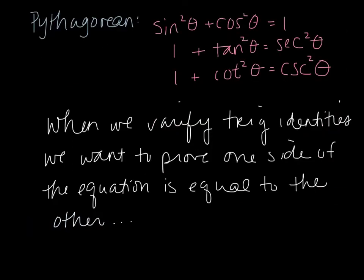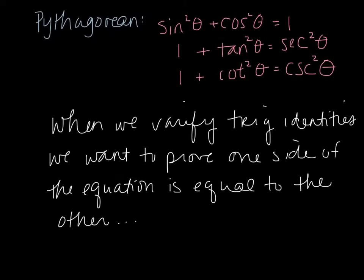We also derived from our unit circle Pythagorean identities. Sine squared plus cosine squared equals 1. When you divide through by sine squared, you end up with 1 plus cotangent squared equals cosecant squared. And when you divide everything by cosine squared, you end up with 1 plus tangent squared equals secant squared. Check back in the 7-1 notes if you want to see how to derive those. We will use these very frequently, so they are ones you need to know.